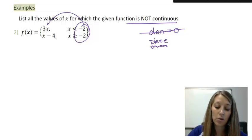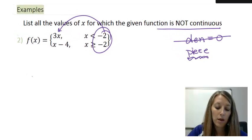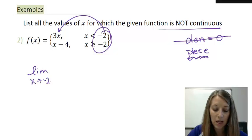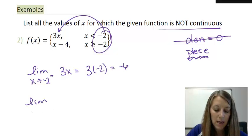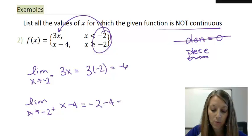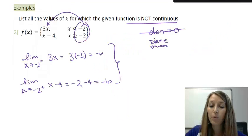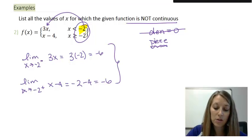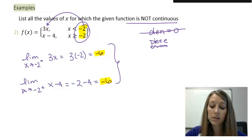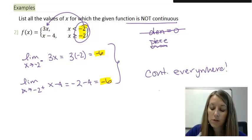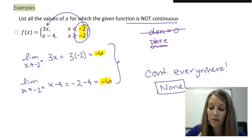We have to substitute negative 2 into both parts and see whether they give the same answer. The left-hand limit as x approaches negative 2 gives me 3 times negative 2, which is negative 6. The right-hand limit as x approaches negative 2 gives me negative 2 minus 4, which is also negative 6. These answers match, which means my two pieces match up. So the only possible place where it was not continuous was at negative 2, but we just proved that's not the case. This is a trick question — the graph is continuous everywhere, and there are no x values where it is discontinuous.